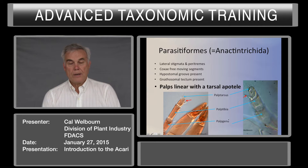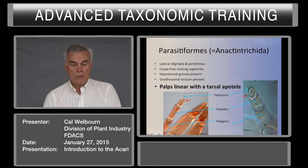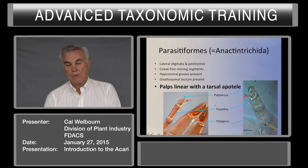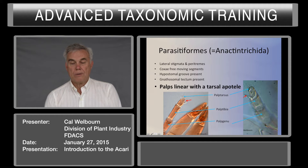Palps are linear with a tarsal apotele. Here we have palps: palp tarsus, palp tibia, palp genu. Right here on the palp tarsus, we have a claw-like structure — the palp tarsal apotele. If we look on the other side, we have the palp tarsus, palp apotele, palp tibia, and palp genu.